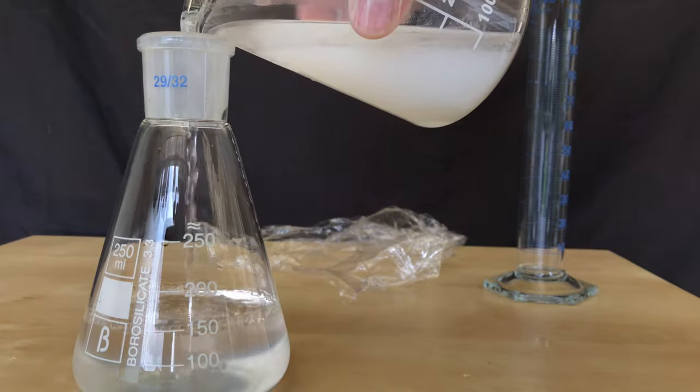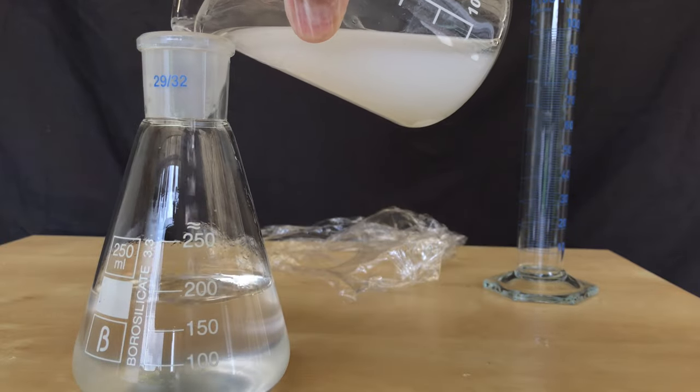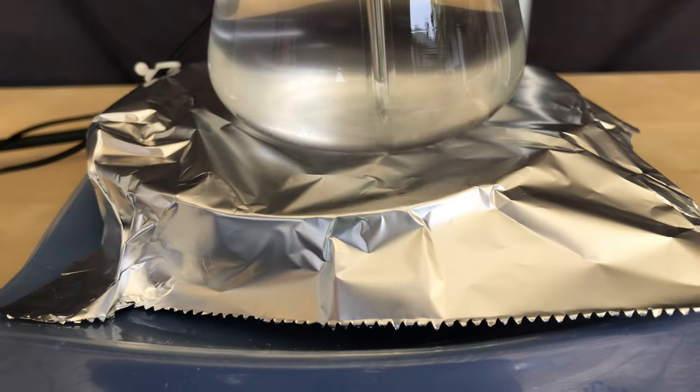For the next step I had to be careful. I decanted over the ether layer while leaving behind calcium chloride solution. Some more ether was added and also decanted off. Time for the next step.